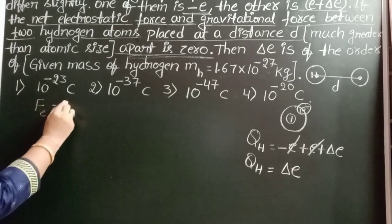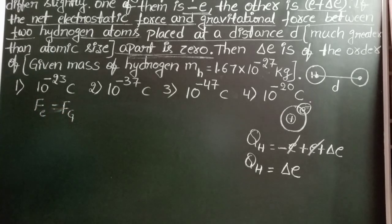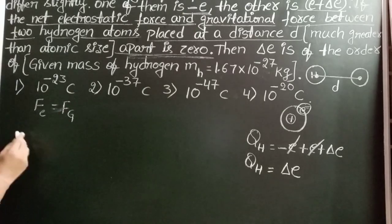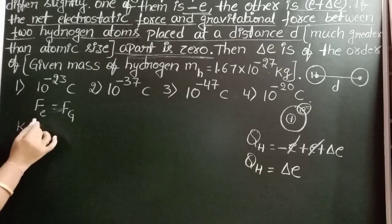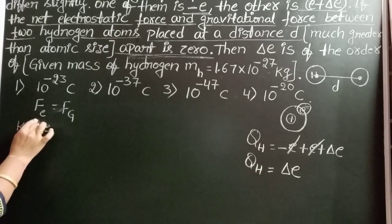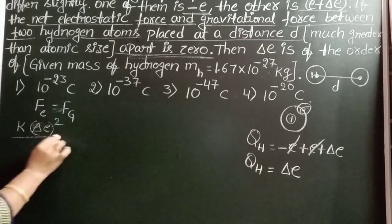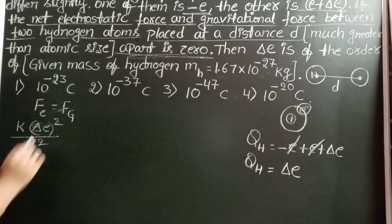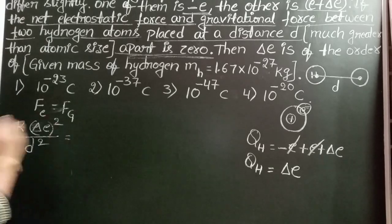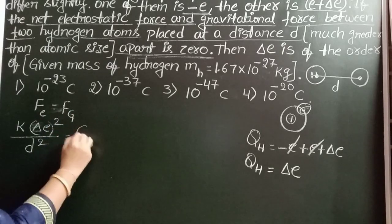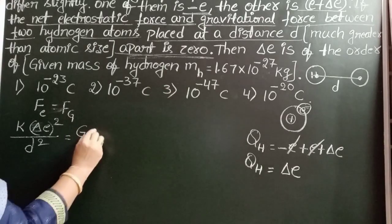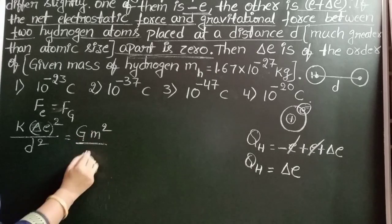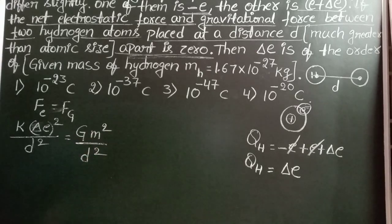Electrostatic force equals gravitational force. Electrostatic force K into delta E whole square by d square equals gravitational force G M into M. Mass is also same, so G M square by d square. On both sides d square gets cancelled.